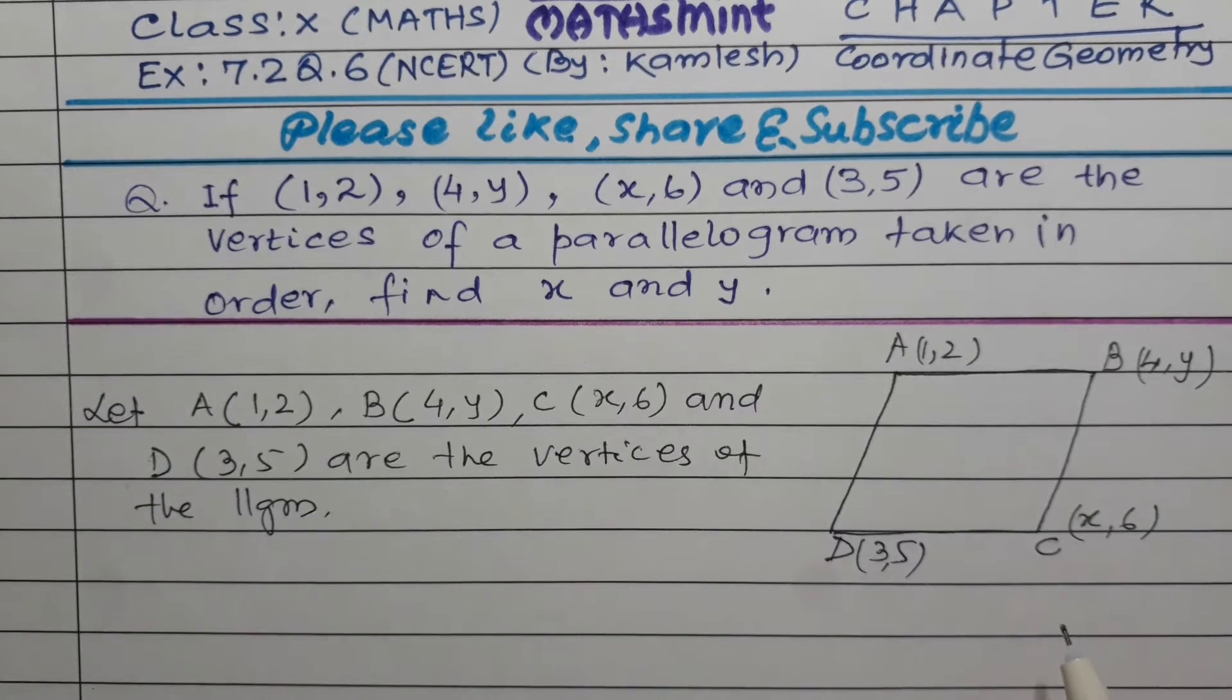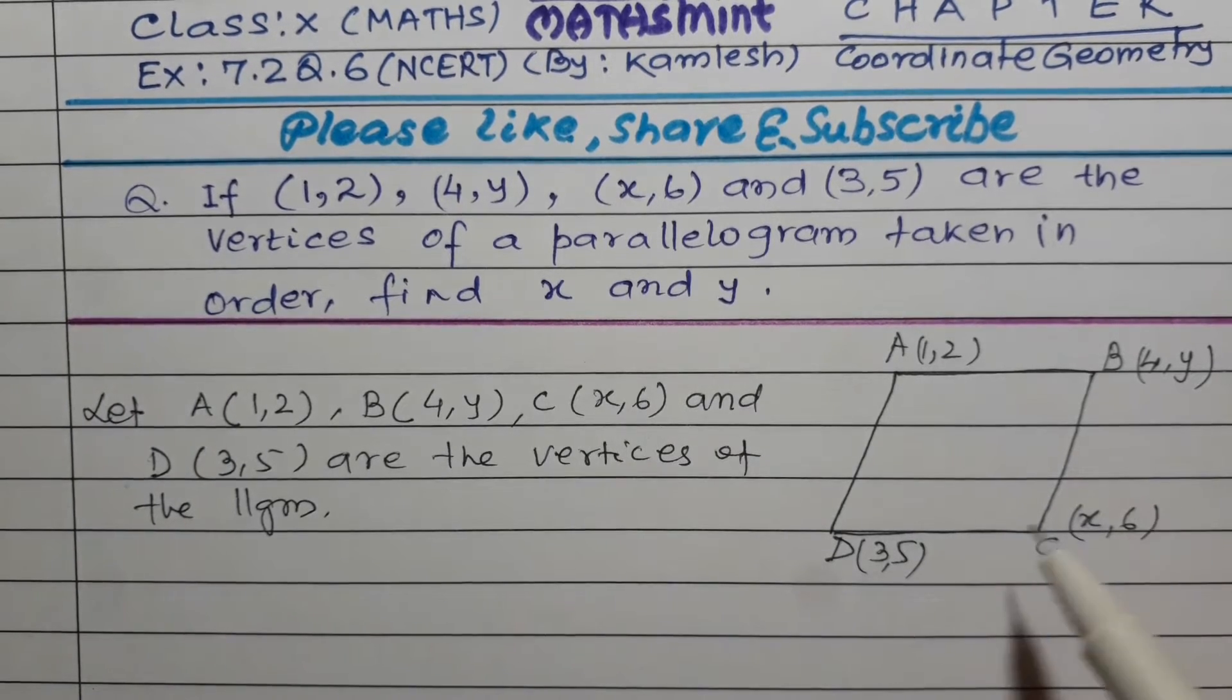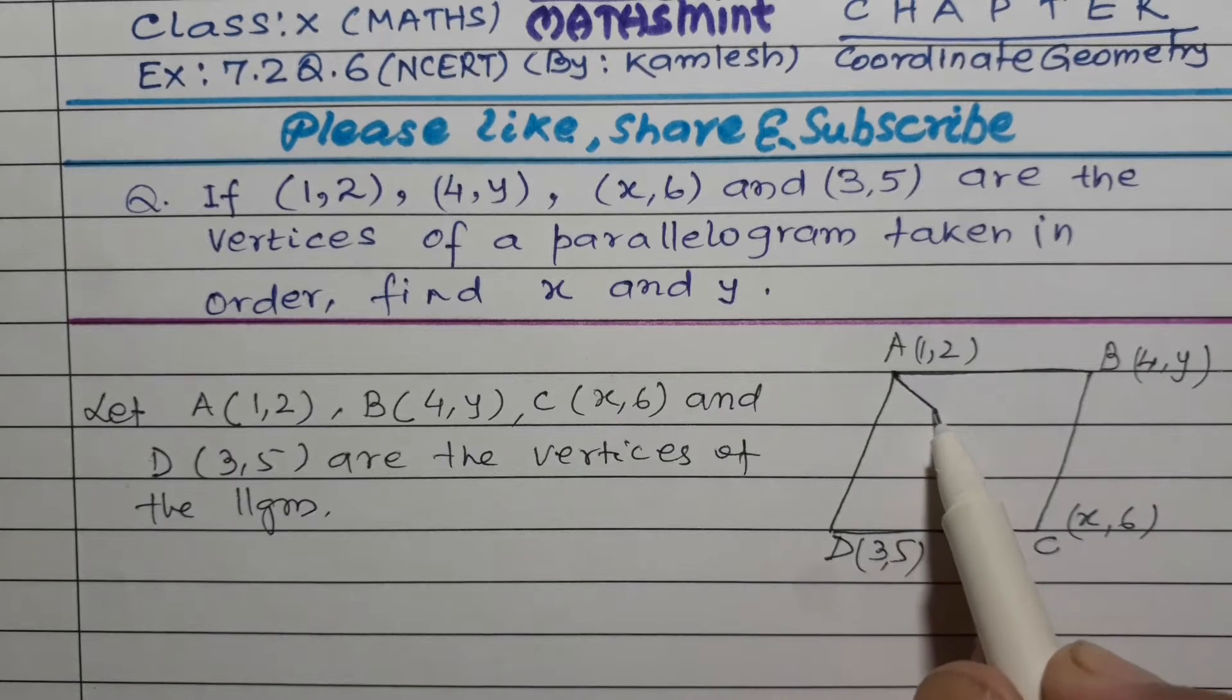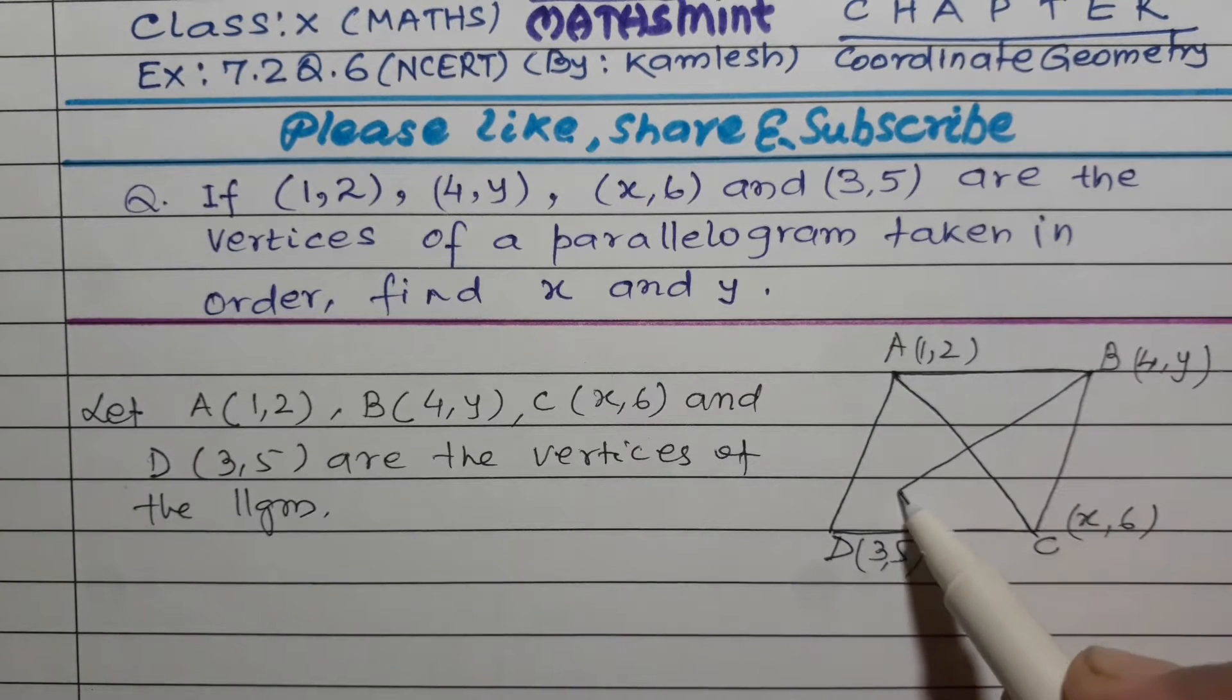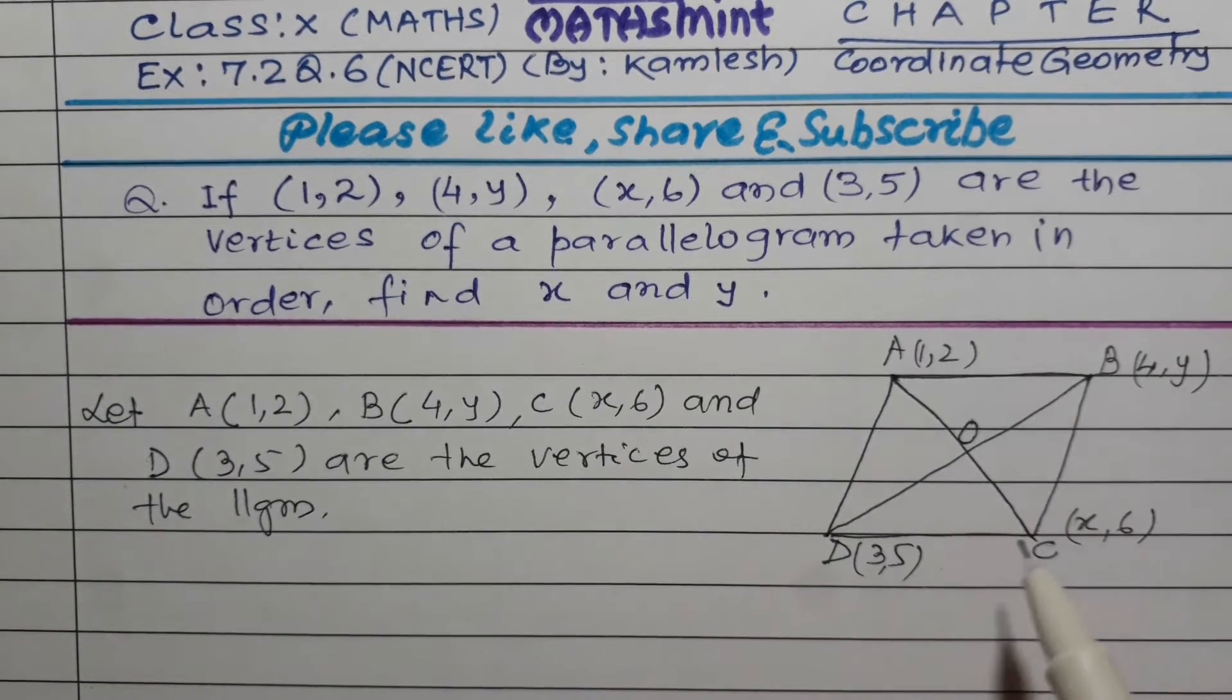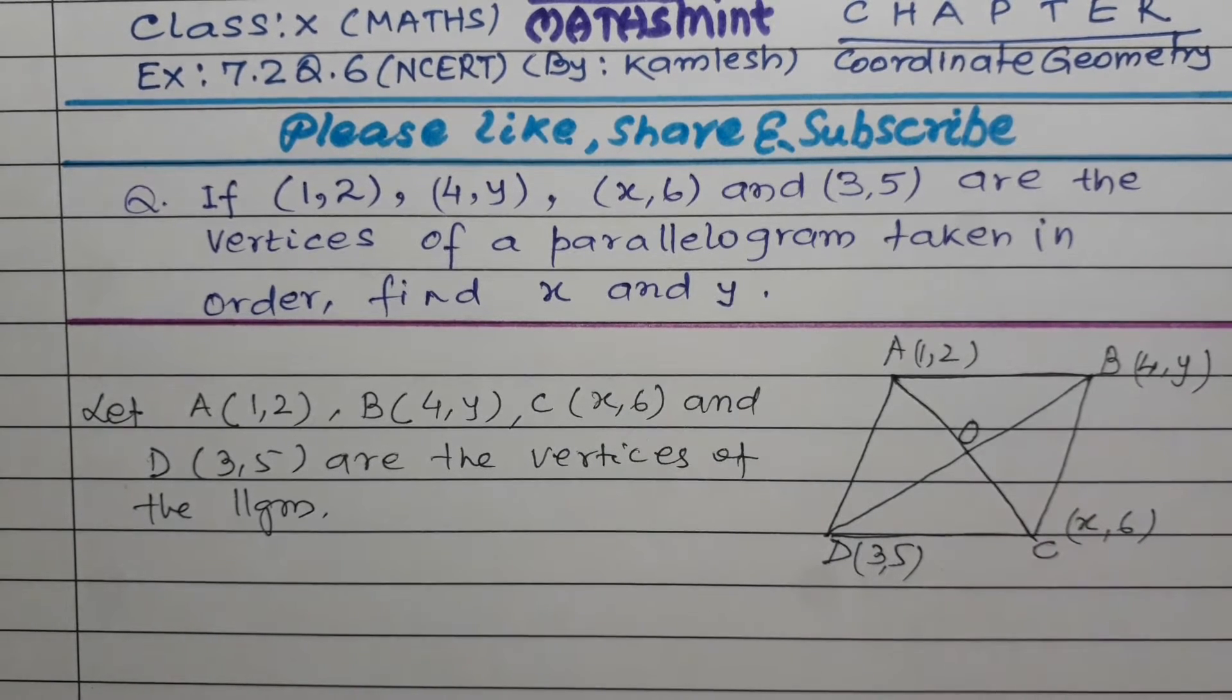Now we know that in a parallelogram, the diagonals bisect each other. This is the characteristic of a parallelogram, that its diagonals bisect each other. So this ABCD parallelogram has one diagonal AC and another diagonal BD which cut each other at point O. So O will be the midpoint for AC and also the midpoint for BD.